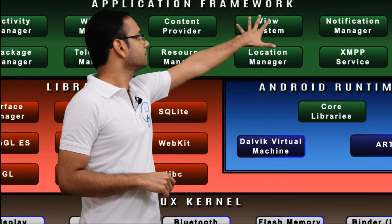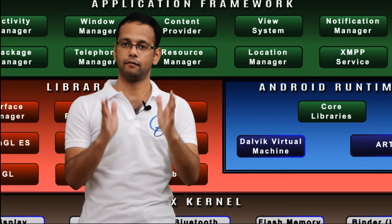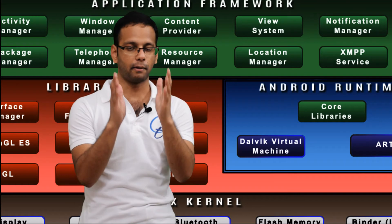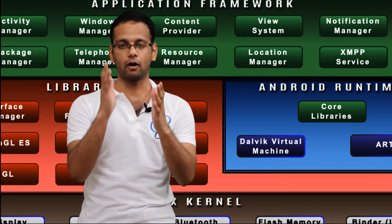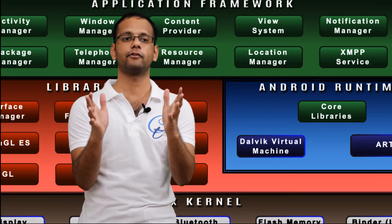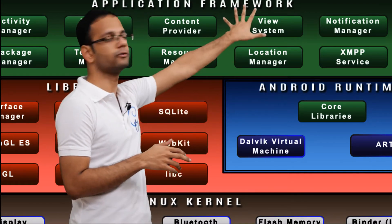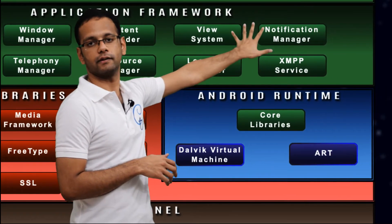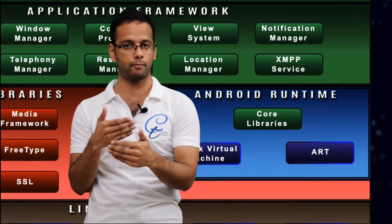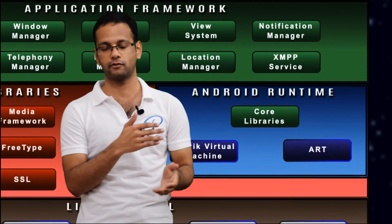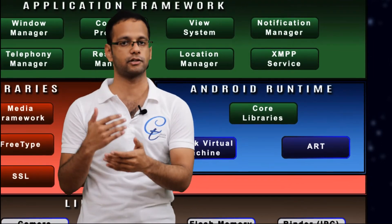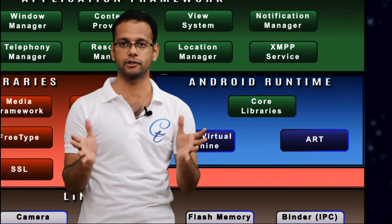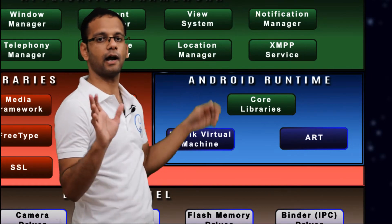Then we have the view system, which manages all the views in Android. Views are all the rectangular elements you see on your screen — whether a button, radio button, scroll view, text view, or edit text. All these are direct classes of the view system, and it manages all those views. The notification manager manages notifications — whatever you see when you drag down from the top of your phone, whether a low battery alert, WhatsApp messages, Facebook messages, or an installation in progress. All notifications from all applications are managed by the notification manager.